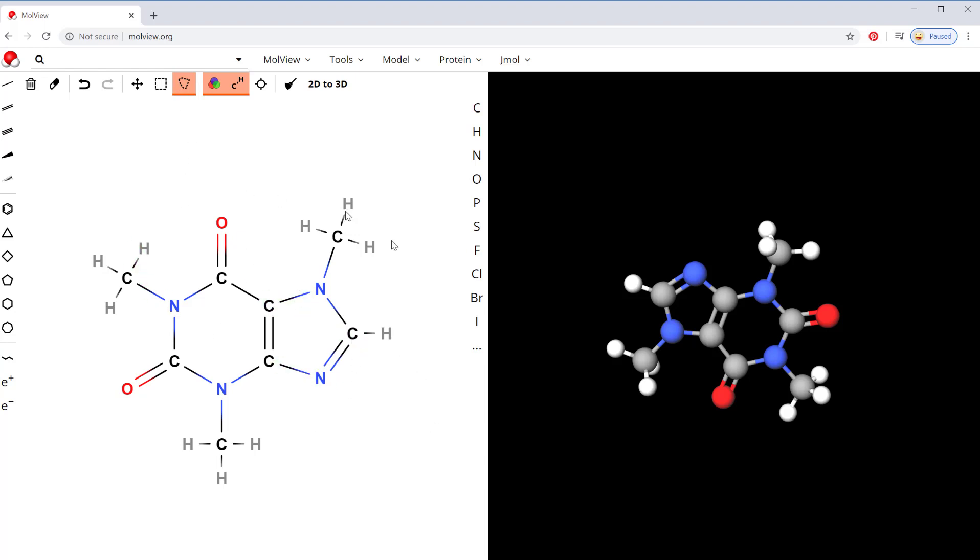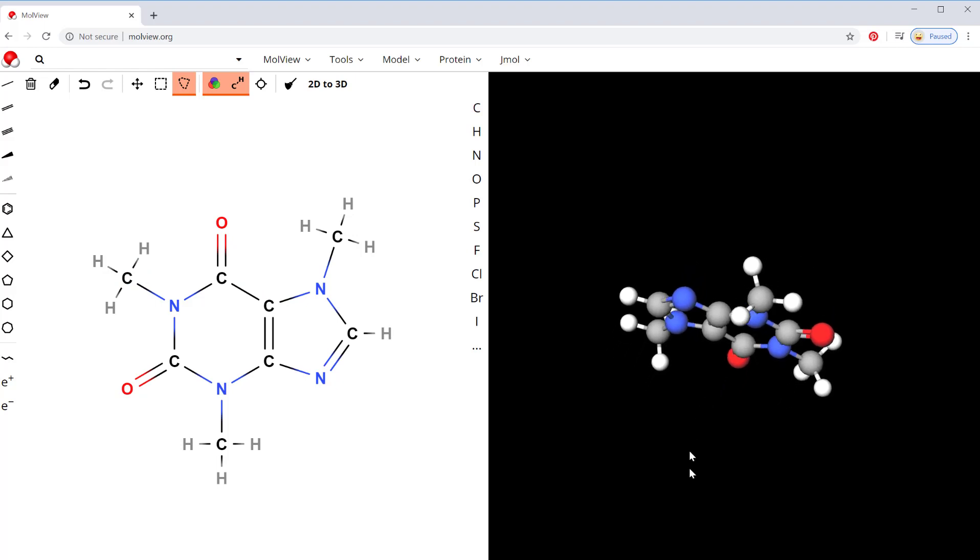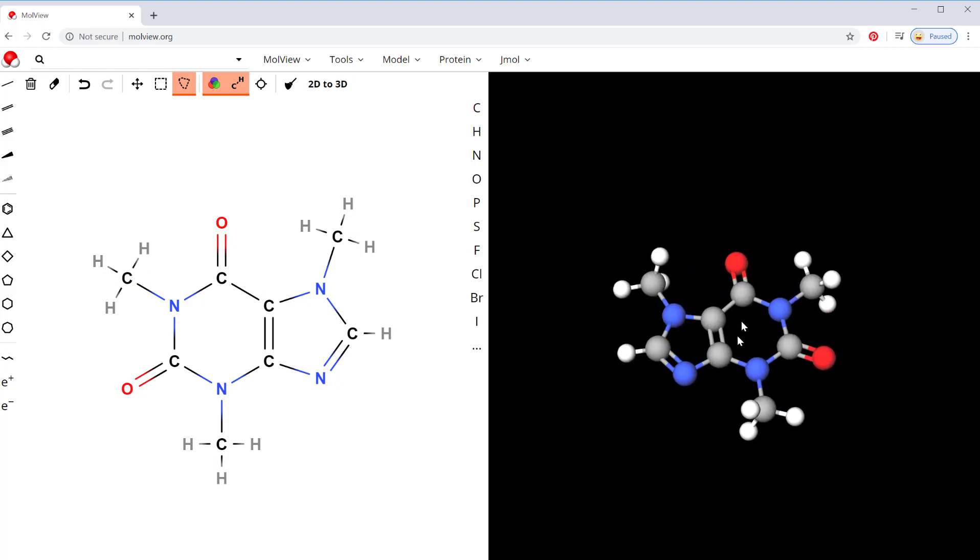So say you want to see caffeine. It'll give you the whole structure here, and then you can rotate it and play with it. You'll notice the red balls represent oxygen, blue always represents nitrogen, the darker gray is carbon, and the whites are hydrogen.